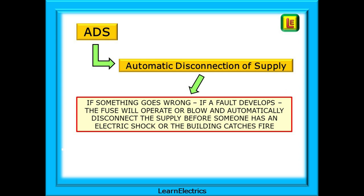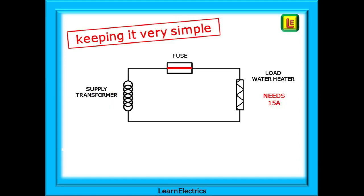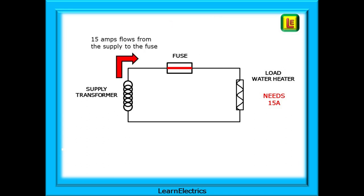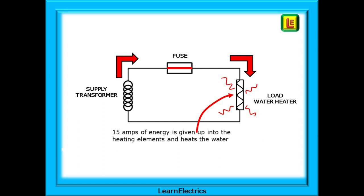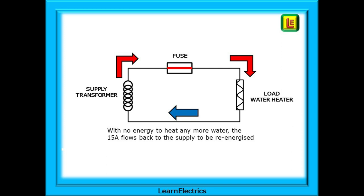A fault occurs, the fuse blows automatically and disconnects the supply to that circuit. Keeping it very simple and just concentrating on a two-wire circuit, we have a circuit that supplies a water heater. The water heater draws close to 15 amps when in use and is protected by a 15 amp fuse. 15 amps flows from the supply transformer, either in the building or down the road somewhere, through the fuse to the water heater. At the water heater the energy in the electricity is given up into the heating elements, heating the water. The current then leaves the water heater having given up all its energy, and flows back to the supply transformer where it can be re-energized and repeat the whole process again.